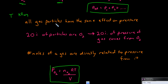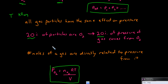Hence, they'll have the same effect on pressure, because they'll have the same force on impact against the wall of a container, being that they have the same average kinetic energy. Because nitrogen and oxygen behave in the same way and have the same effect on pressure, we could say that if 20% of the overall particles in a container are oxygen, then 20% of the pressure within that container comes from oxygen. The number of moles of a gas are directly related to the pressure from that gas.